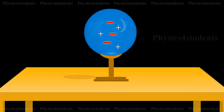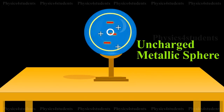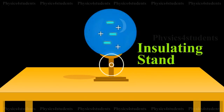The animation shows the steps involved in charging a metal sphere by induction. There is an uncharged metallic sphere on an insulating stand.